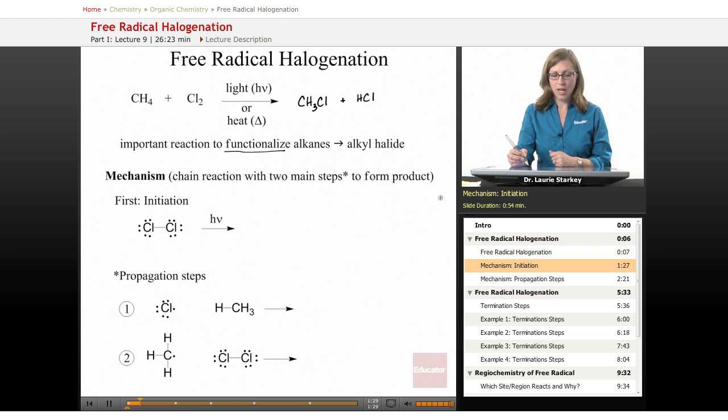So let's take a look at the mechanism of the free radical halogenation. And as the name implies, it's going to involve free radicals. And it's also an example of what's known as a chain reaction. And we're going to have two major steps that form the product. But before we can get to those two major steps, first we have to start the radical reaction. And that first step is called an initiation.